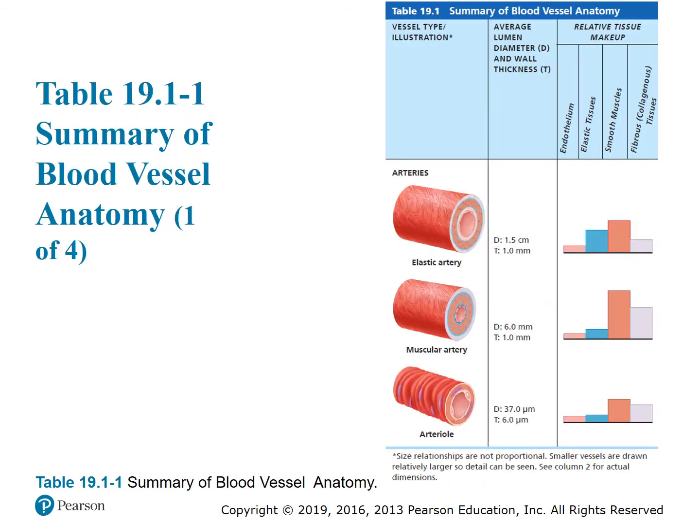Table 19.1: Summary of blood vessel anatomy. There are three types of arteries: the elastic artery, the muscular artery, and the arteriole. The table gives the average lumen diameter, wall thickness, and relative tissue makeup. They vary, but they all have a layer of smooth muscle.